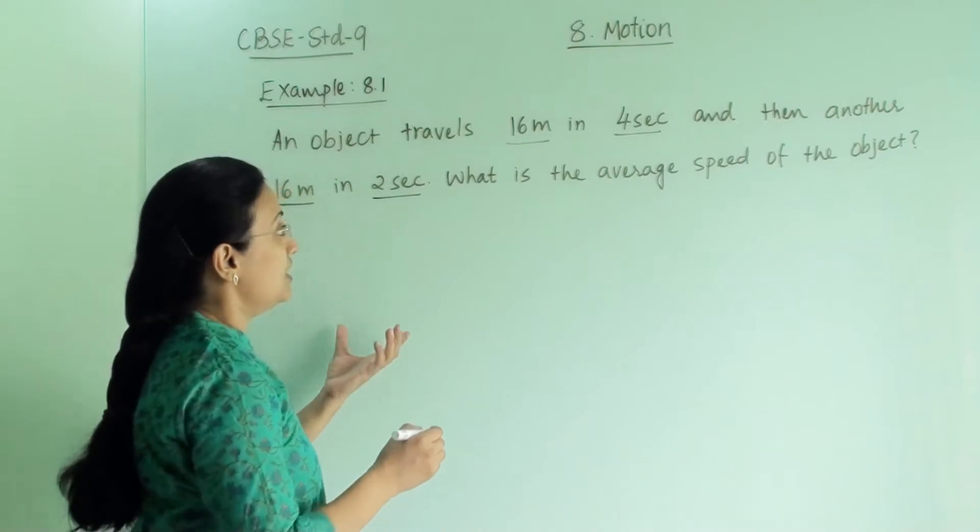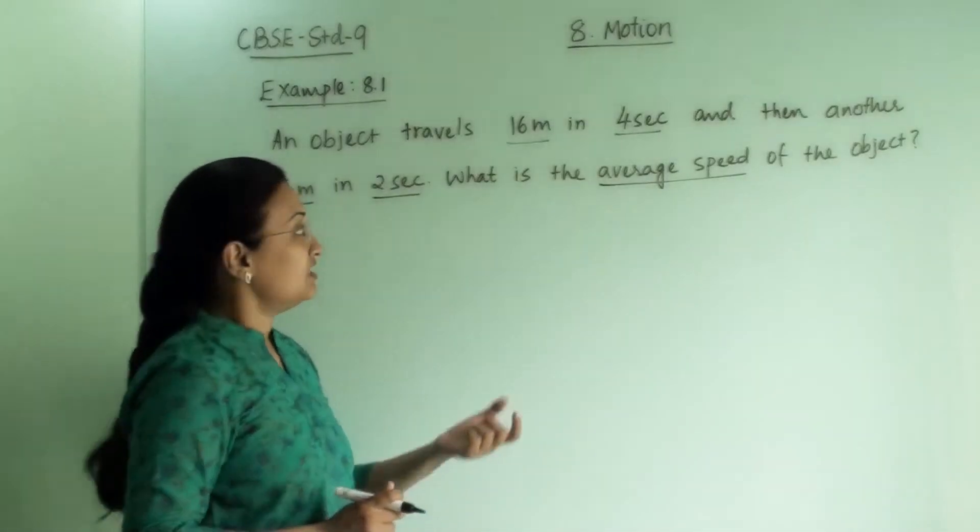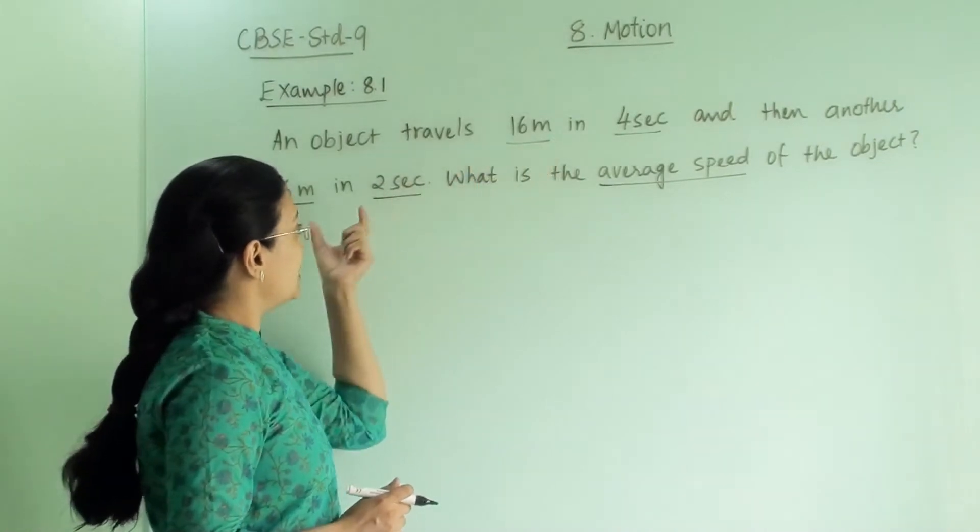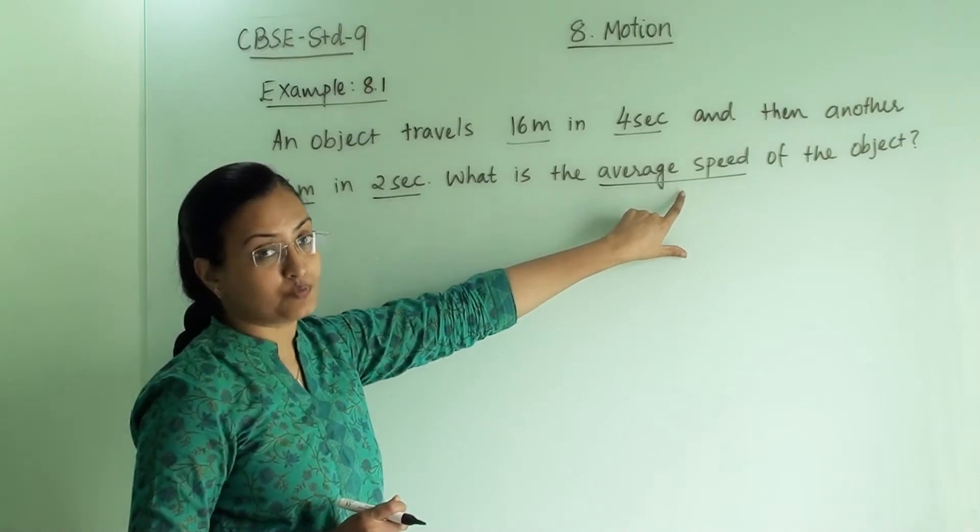Now first of all let us understand what is average speed. So here they have given two journeys in two different time intervals and from that we have to find out the average speed.